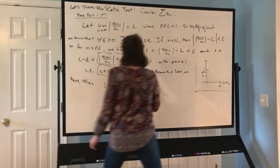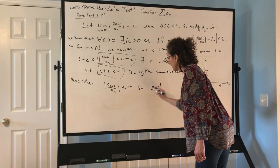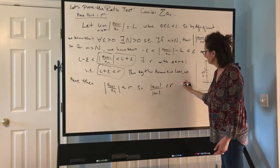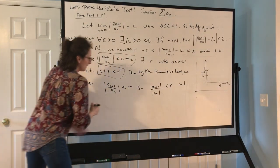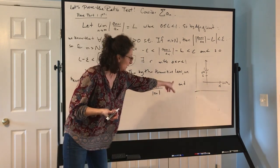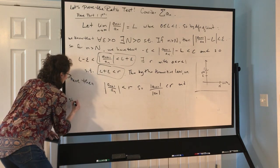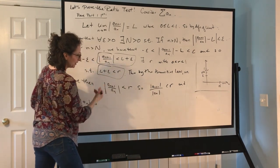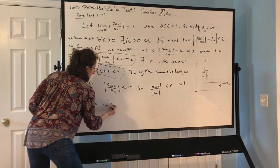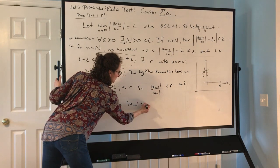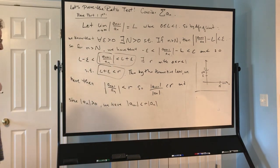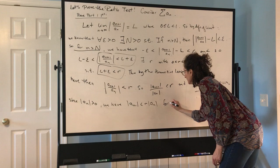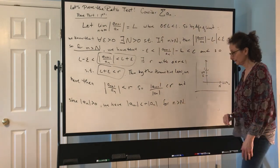Since |a_{n+1}/a_n| < r, by fraction math with absolute values that means |a_{n+1}| < r·|a_n|. Since |a_n| is positive we can multiply across the inequality without changing direction. This is true for all n greater than capital N — as long as we're far enough out, we have this inequality.